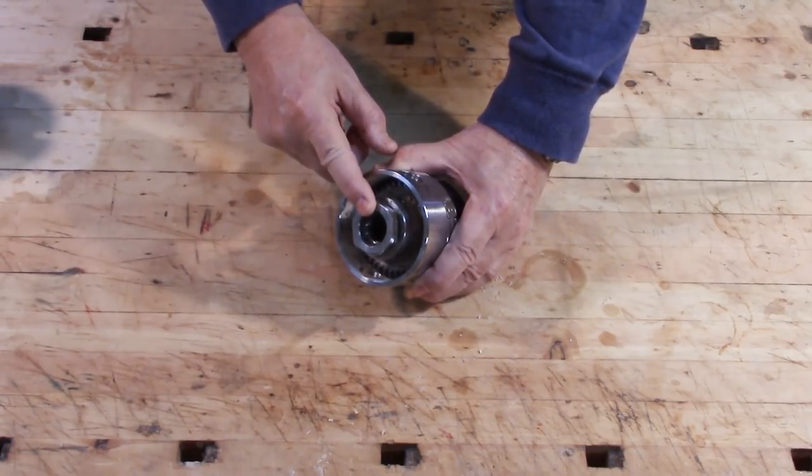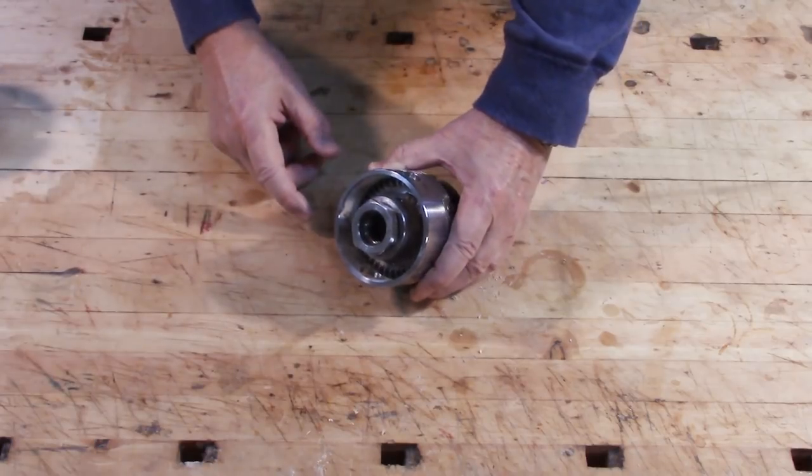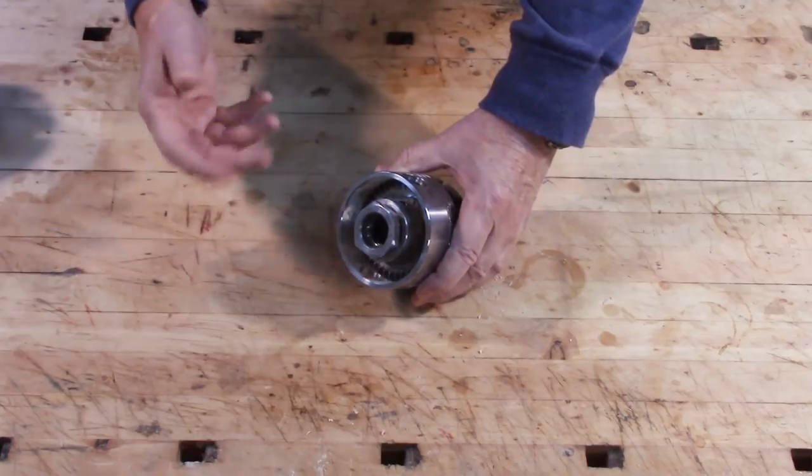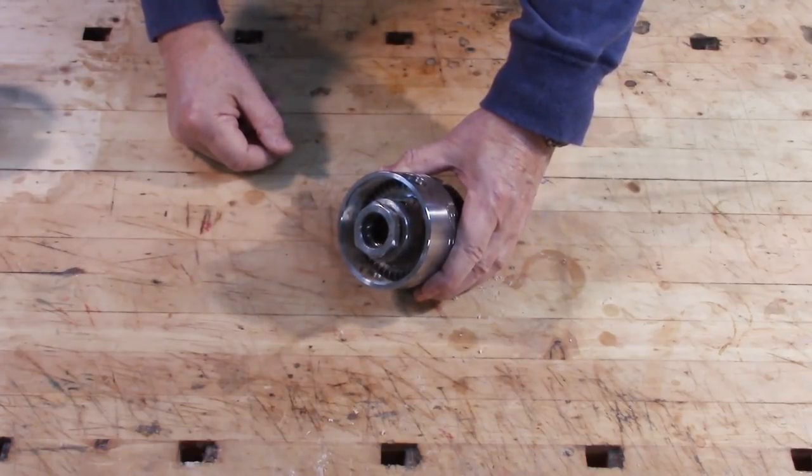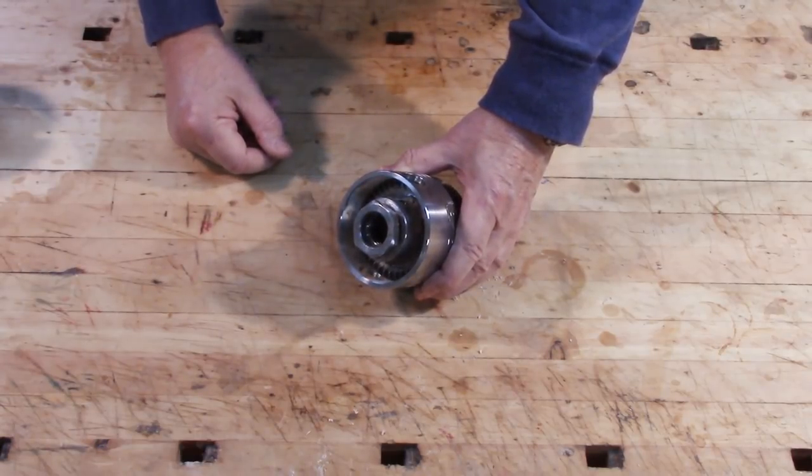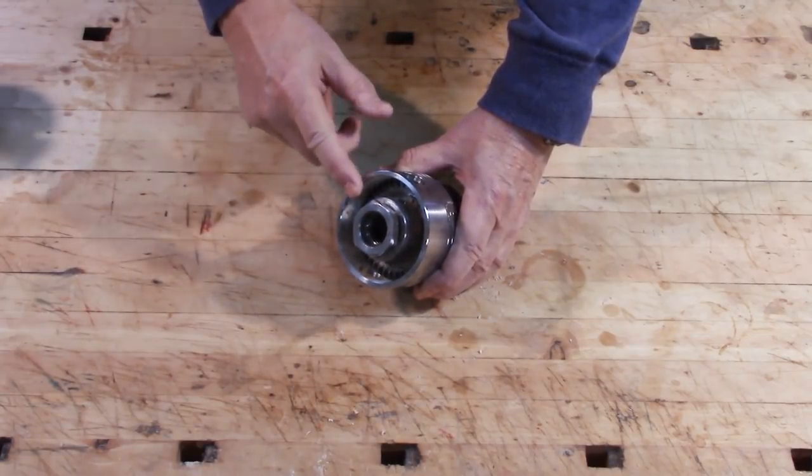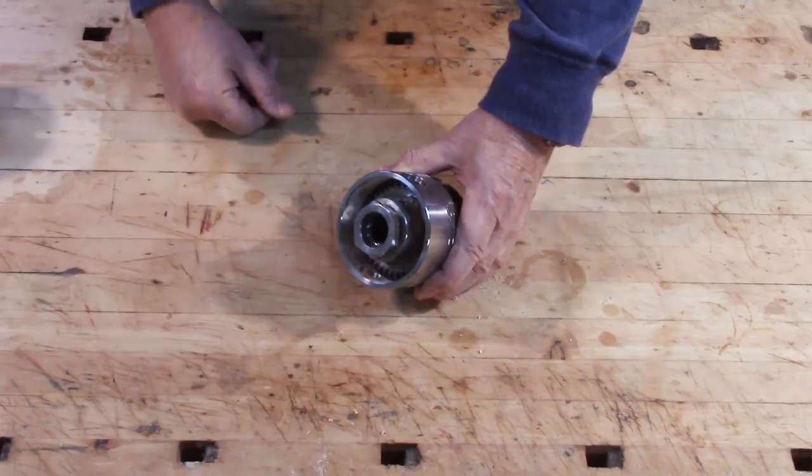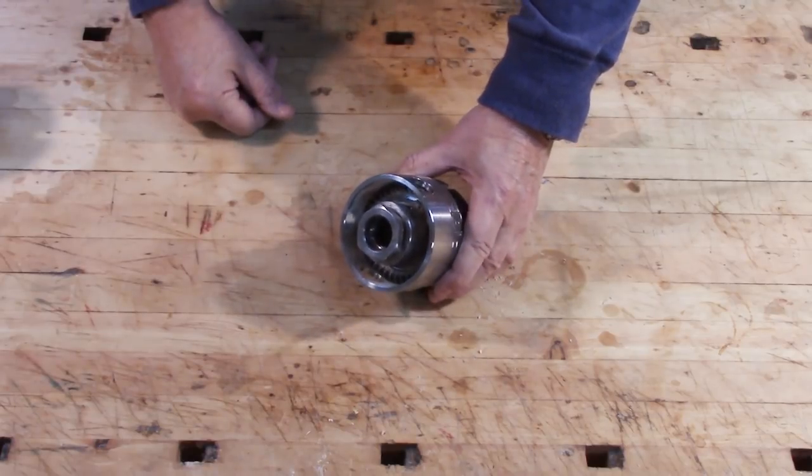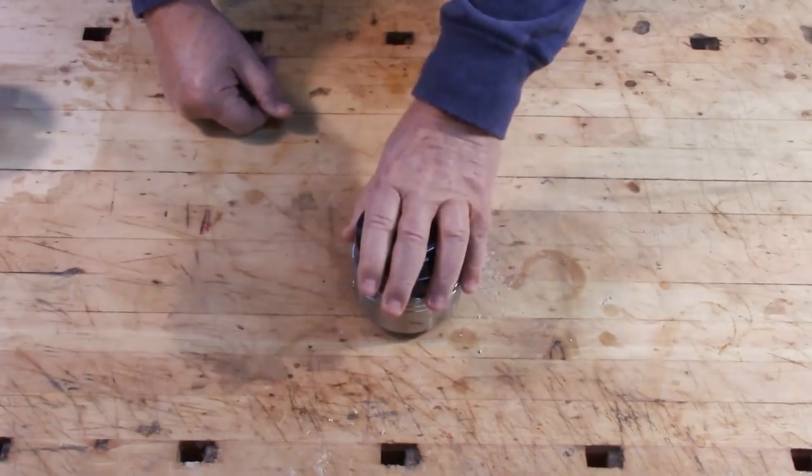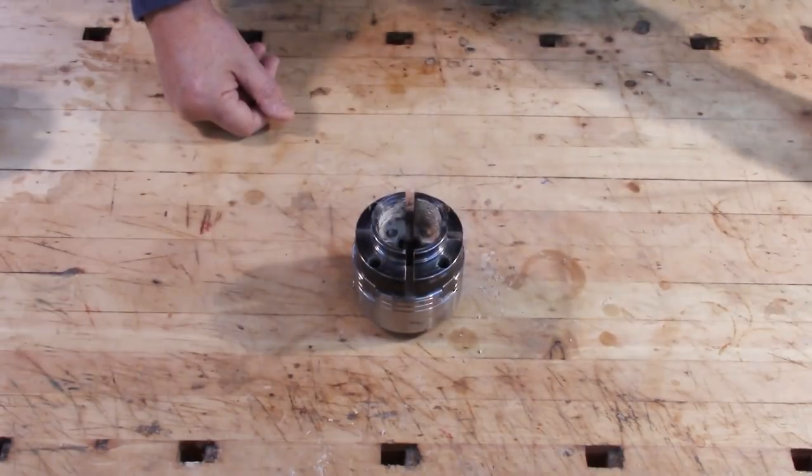The reason the manufacturers do that is primarily so that if you buy another lathe, a larger lathe, or conceivably a smaller lathe, that has a bigger or smaller headstock spindle, you can just unscrew this from the chuck and put in a new insert and you're good to go. You don't have to buy a whole new chuck.